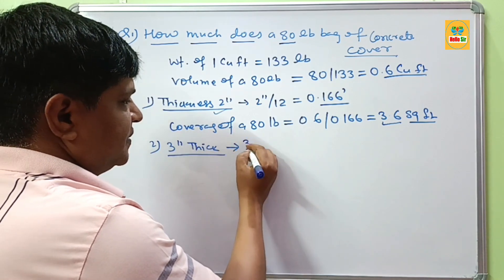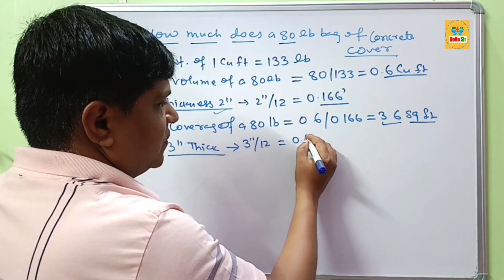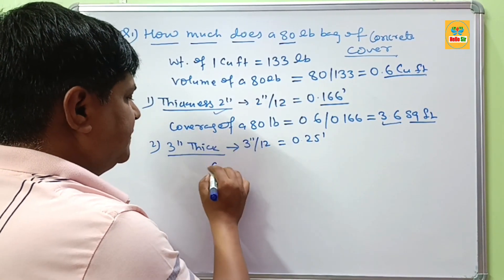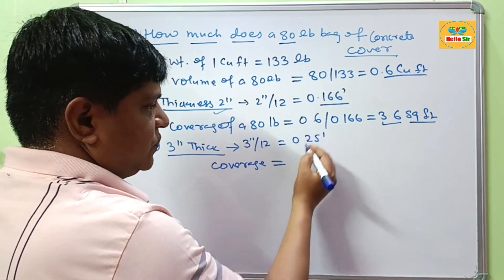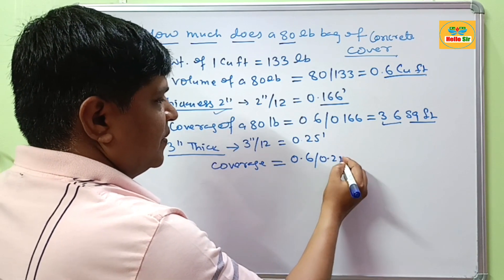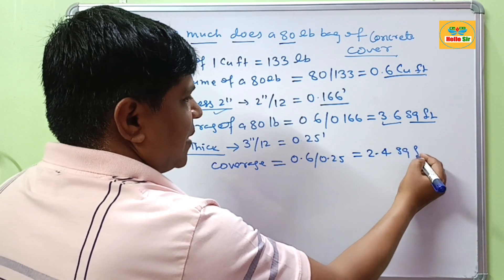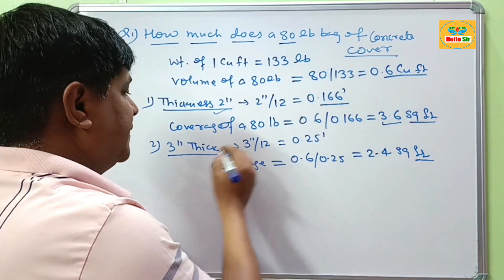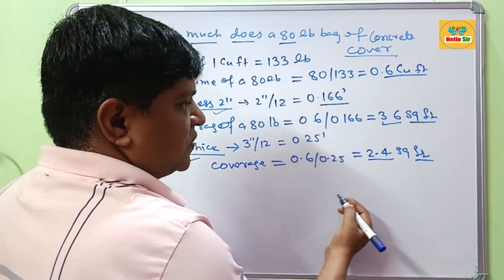If your thickness is 3 inches, first convert 3 inches into feet, which gives about 0.25 feet. The coverage is equal to 0.6 divided by 0.25, which comes out to about 2.4 square feet. So one 80 lb bag of concrete covers 2.4 square feet at 3-inch thickness.